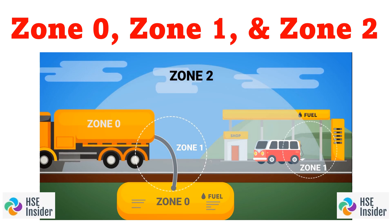Zone 2 is the area where an explosive atmosphere is not likely to occur under normal operating conditions, but may occur occasionally due to abnormal circumstances. While the risk in Zone 2 is lower compared to Zone 0 and Zone 1, it is still important to take precautions to prevent incidents. Equipment used in Zone 2 must be designed to withstand the occurrence of an explosive atmosphere and to reduce the risk of ignition.